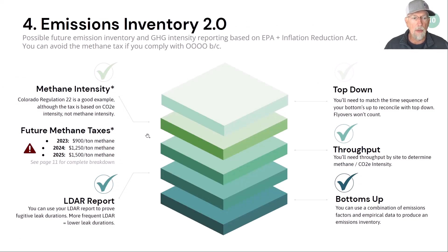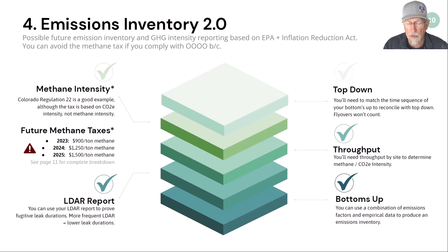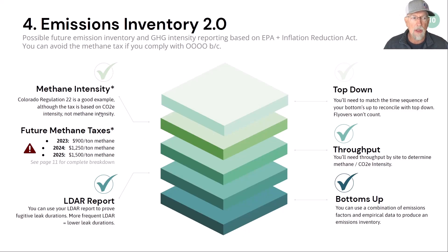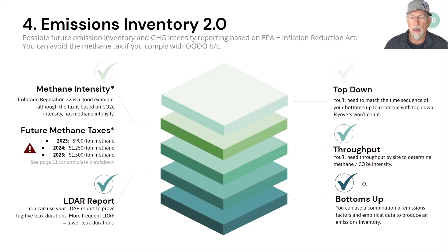Emission Inventory 2.0: the big idea is you still have your bottoms-up emissions inventory, but some people are already using the LDAR report to prove leak duration — the shorter your reporting period, the shorter the potential duration of a leak. They talk about methane intensity; in order to calculate it, you'll need to measure your throughput. Colorado Reg 22 is a good example, where they have a CO2e intensity per site. Similar to OGMP 2.0, there's this idea of reconciling top-down and bottoms-up — this is where things are headed.